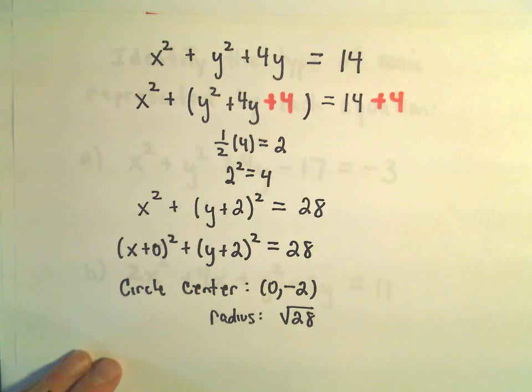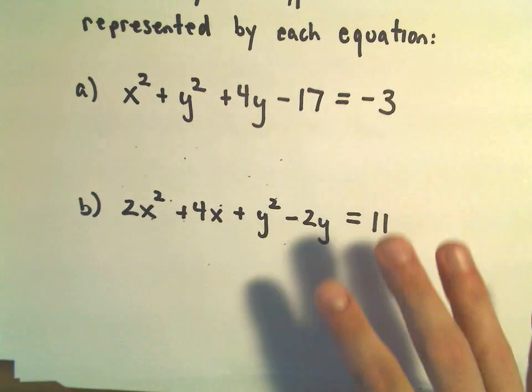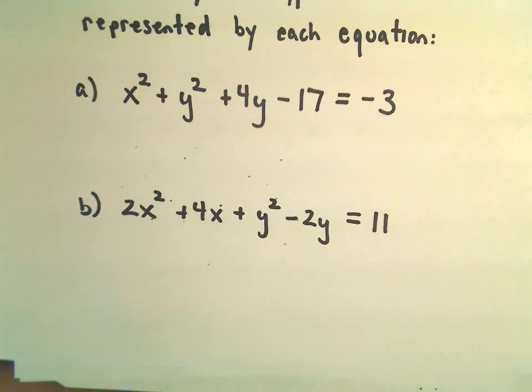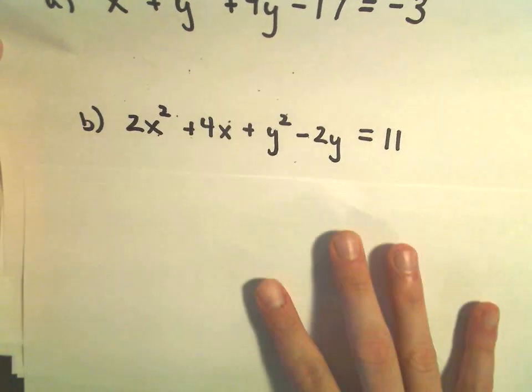So that's it. That's what we have here. Let's do this other example as well. We've got 2x squared plus 4x plus y squared minus 2y equals 11.